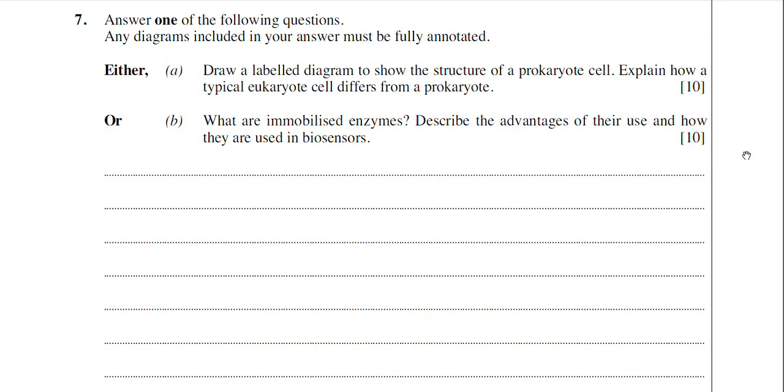Part B then, what are immobilised enzymes? Describe the advantages of their use and how they are used in biosensors. So immobilised enzymes then are basically enzymes that have been entrapped or fixed onto an inert matrix. That's basically what immobilised enzymes are.